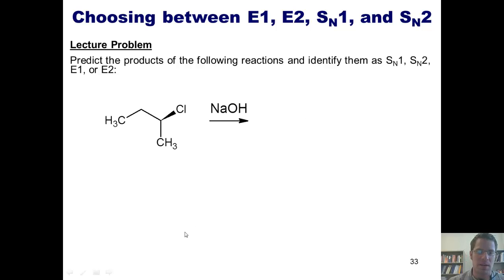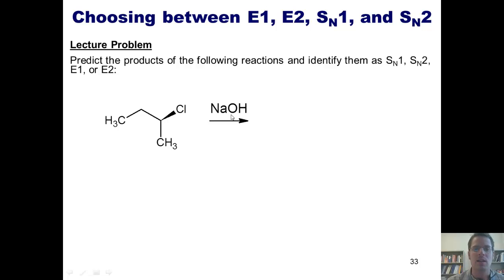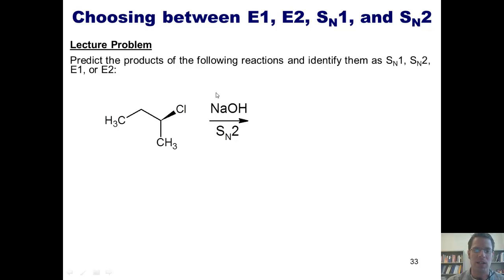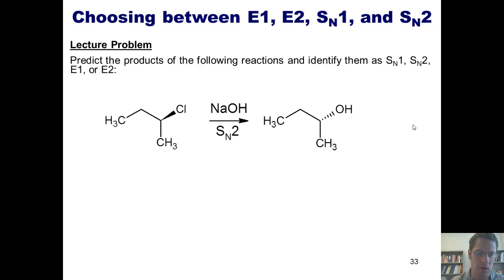For this example: is my leaving group — this chlorine — stuck to a primary, secondary, tertiary, or stabilized carbon? It's secondary, which means this could potentially be E1, E2, SN1, or SN2. Is my nucleophile/base strong or weak? There's a localized negative charge on this oxygen, meaning it is strong. Thus, it will proceed through either E2 or SN2. Is my nucleophile/base a nucleophile or a base? It's smaller than ethanol on paper, which means it's a nucleophile, so this will favor an SN2 mechanism. Hydroxide comes in with backside attack, kicking off the chloride in a single step, giving this product with inversion of stereochemistry.